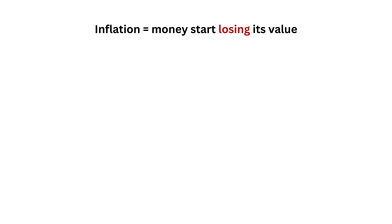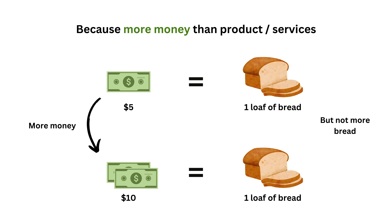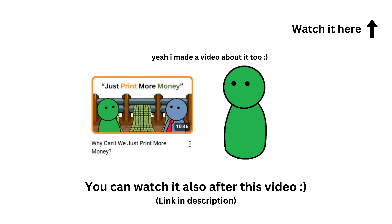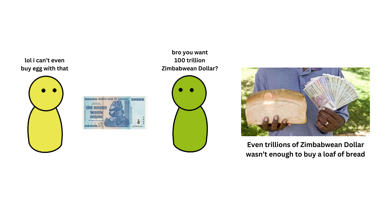Section 1: Inflation. Inflation is when the currency starts losing its value. Simply said, it's where there's more money compared to the amount of product and service. You can watch my video about why don't we just print more money to understand more about this. When a country has high inflation, its currency's value will decrease. Because nobody wants to buy and hold a currency that is losing value.